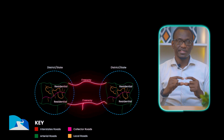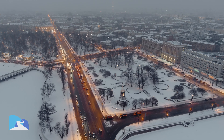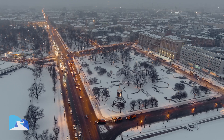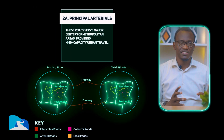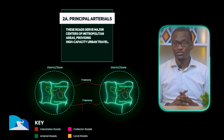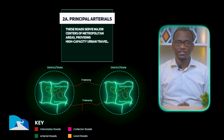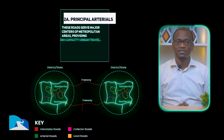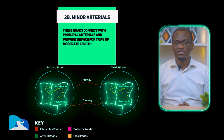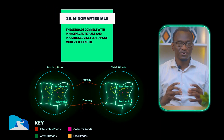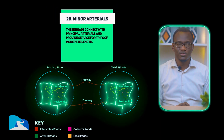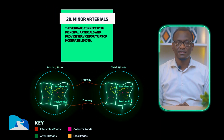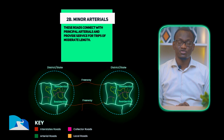The second class is what they call the arterials. They have one class called the principal arterials. These roads serve major centers of metropolitan areas, providing high capacity urban travel. Then we have the minor arterials. These roads connect with principal arterials and provide service for trips of moderate length.